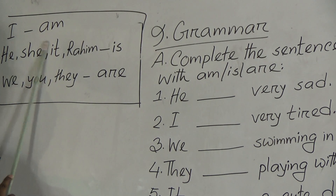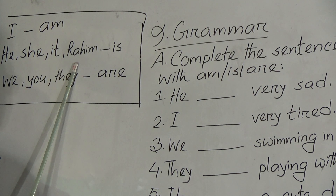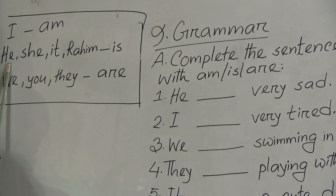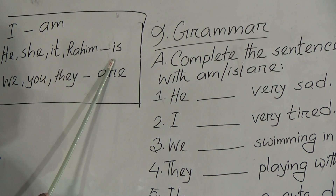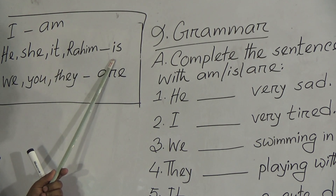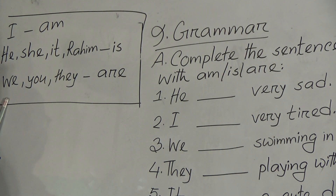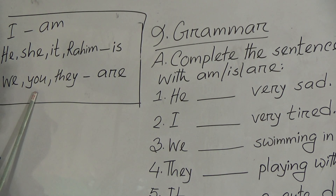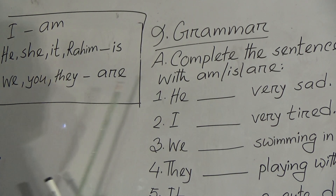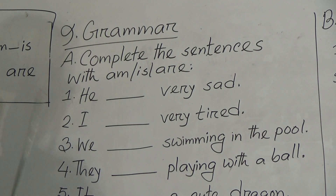We will put 'am' only after 'I', nowhere else. Second, after he, she, it, or any one name like Rohim, Salma, Rekha, Sabihan — any one name, any one pronoun — we use 'is'. If the subject is he, she, it, or any one name, we will put 'is'. And next, after we, you, they — we means plural, you means many, they means plural — so after we, you, they, if the subject is many, we will put 'are'. So let's complete the sentences with am, is, or are.